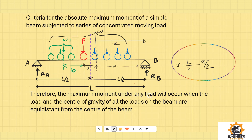Therefore, the maximum moment under any load will occur when the load P and the center of gravity of all loads W on the beam are equidistant from the center of the beam. The center of the beam is the dotted line at L/2. The distance from W and P to the center is the same on each side.